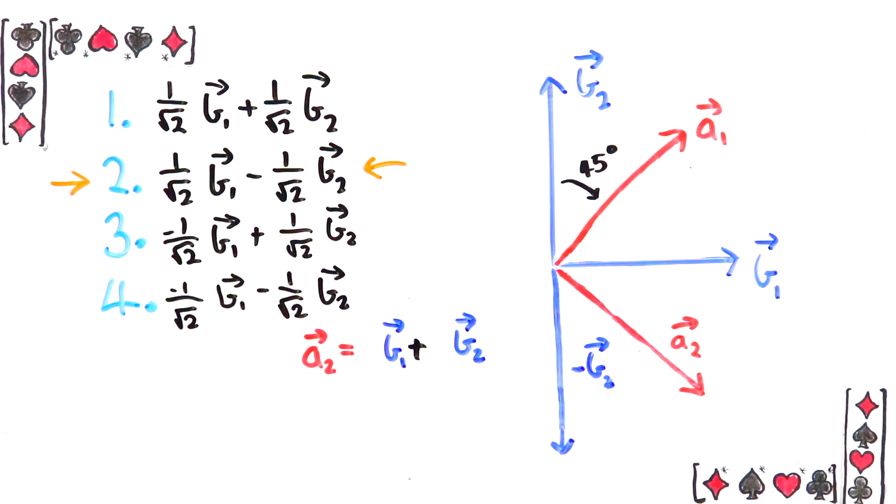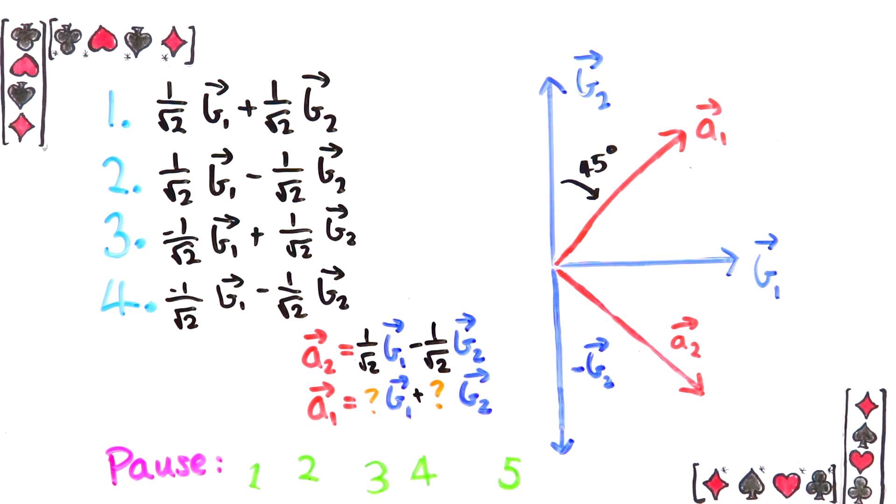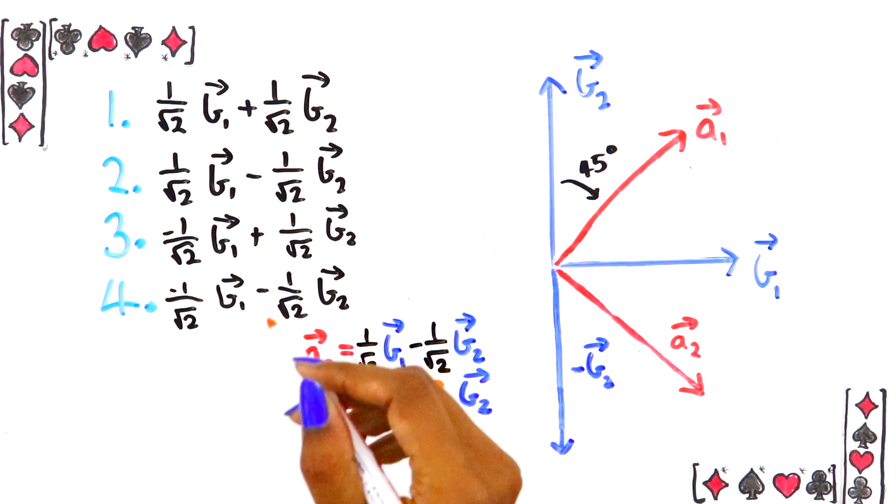If you aren't sure how to approach that question, may I suggest my video on vectors as a refresher? The link is in the description and in the corner. Now say that Alice wanted to write her first basis vector in Bob's basis. Which one of these options would that be? Hopefully you can see that it's 1.